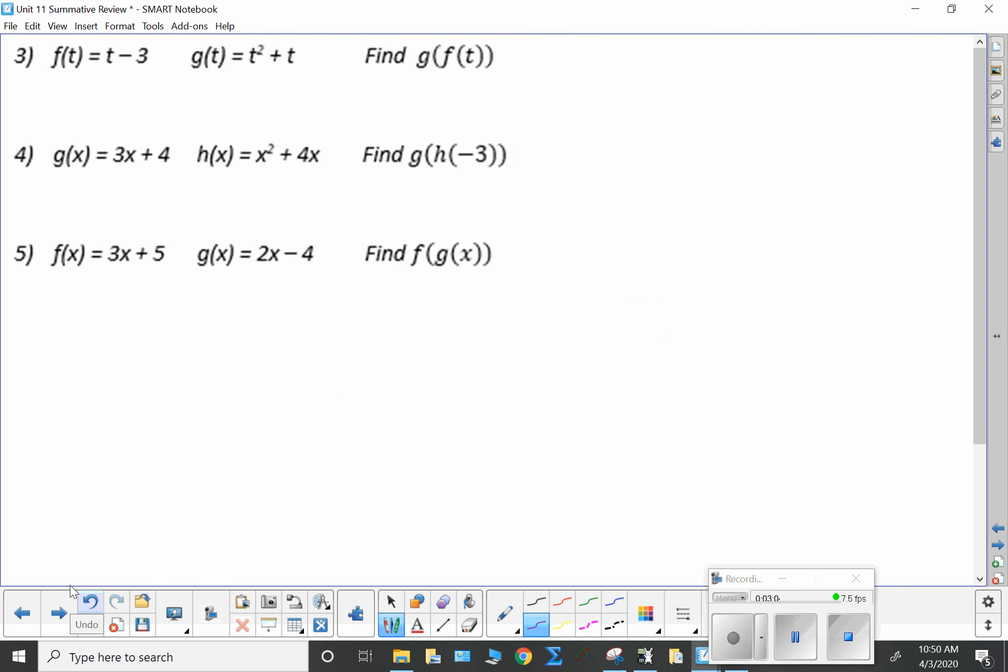Number 3 up here. We want to have g of f of t. So, g is t squared plus t. f of t is t minus 3. t minus 3, t minus 3.